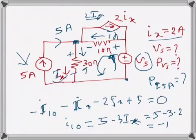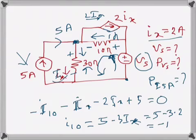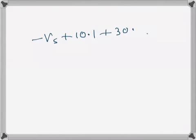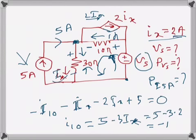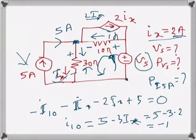Continuing counterclockwise, the voltage drop across the 30 ohm resistor is also a drop. That's 30 times Ix, which is 30 times 2, giving us 60. Setting the sum to zero: minus VS + 10 + 60 = 0, so VS = 70 volts.